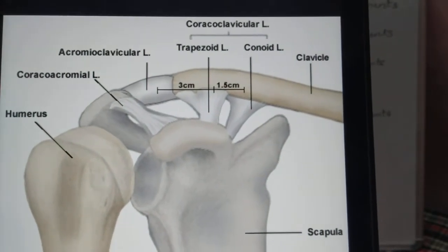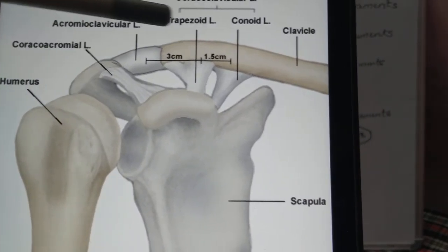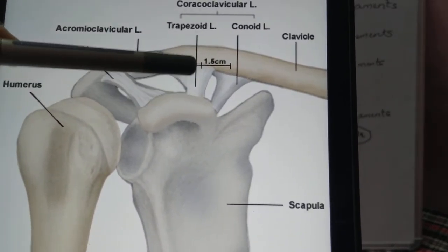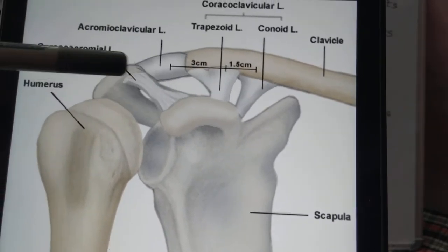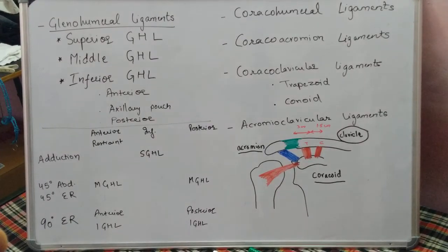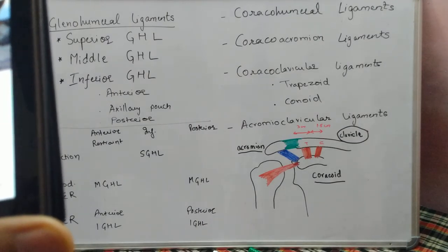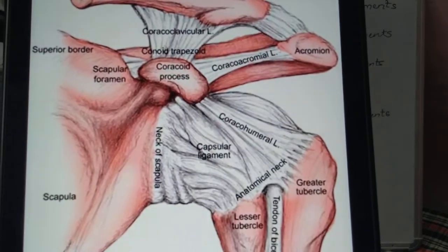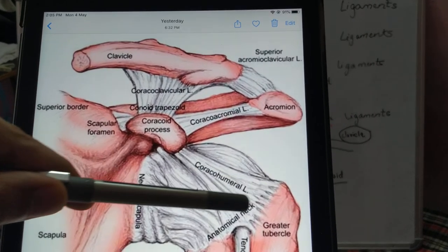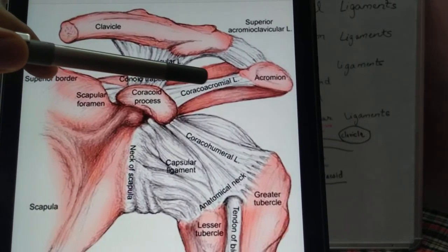To revise, we can see here the head of humerus, the glenoid, the coracoid process, the acromion, and the clavicle. Here we have the coracoclavicular ligament with its two parts — trapezoid and conoid — and superiorly the coracoacromial ligament. We can also clearly see the coracohumeral ligament starting from the lateral end of the coracoid and attaching in two parts over the lesser tubercle and the greater tubercle.